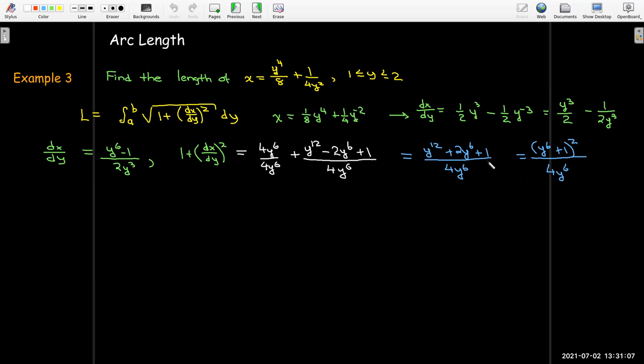And the advantage of that is now I have a perfect square on the top and on the bottom. So both the numerator and the denominator are perfect squares, because in my integrand I need to take the radical of 1 plus (dx/dy)². So when I take the radical, I'll just be able to take the square root of top and bottom.